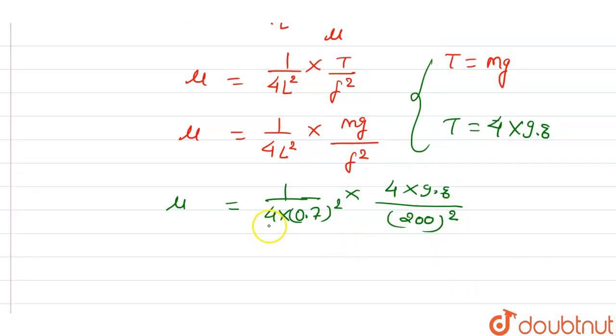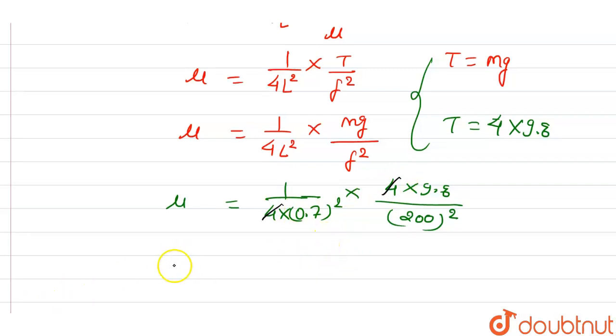Now, we will solve it. This is 4. What will happen? It will cancel out. This 4 and this 4 will cancel out. Now, we will calculate it. So we will get mu equals, we will solve this whole. We will do 0.7 square.